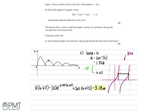For the marks in part c: one mark for recognising we need to solve tan(x) = 4 and substitute into h(t); a second mark for substituting the correct value into h(t) and writing out the expression; and the final mark for the correct answer of 3.18 metres.